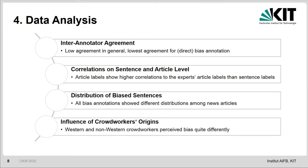We also analyzed the datasets with respect to different aspects. For example, we considered the inter-annotator agreement. We found that the inter-annotator agreement is quite low in general, and we had the lowest agreement with respect to the overall bias annotation. We had slightly higher inter-annotator agreement with respect to the bias dimensions: hidden assumptions, subjectivity, and framing. We also calculated correlations between the sentence level and the article level, and found that aggregating sentence labels to the article level corresponds more closely to the expert labels than considering sentence labels alone.